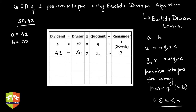Now what you need to do is shift: the first b goes to a's position, so 30 comes here. And this R comes into b's position, so 12 goes here. Then how many times does 12 go into 30? Two times, because 12×2 is 24 which is less than 30, and 12×3 is 36 which is more than 30. So 12×2 equals 24 and the remainder will be 6, since 24 plus 6 is 30.